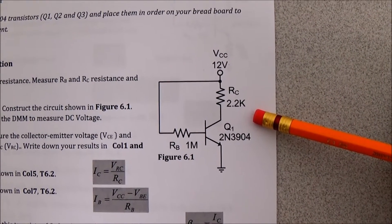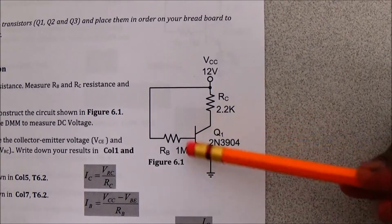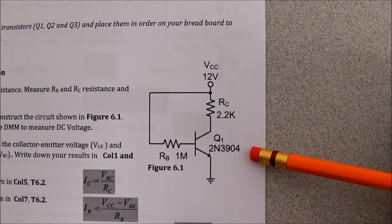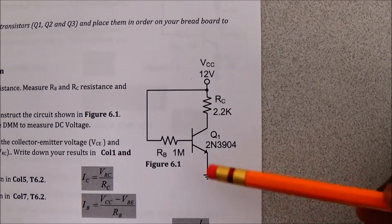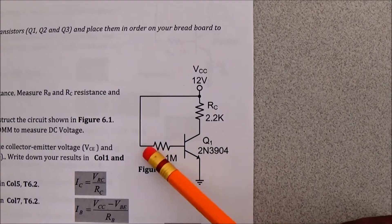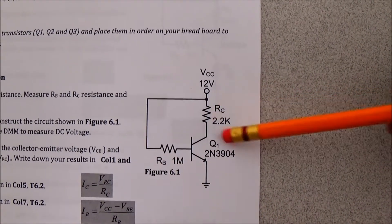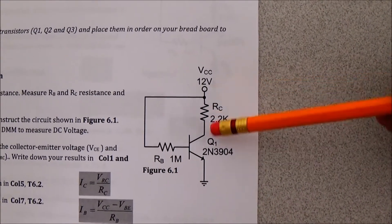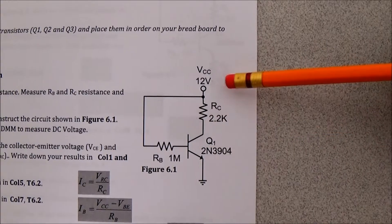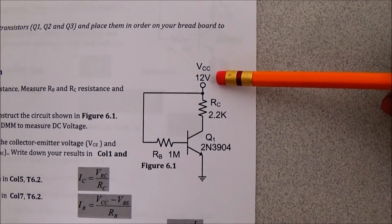This is the fixed base bias configuration circuit. You are using one 2N3904 transistor, one mega ohm resistor connected to the base, and a 2.2 kilo ohm resistance connected to the collector. The supply voltage should be 12 volts here.